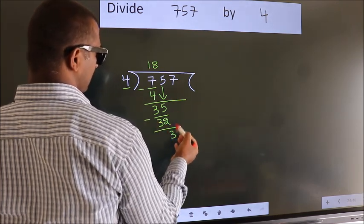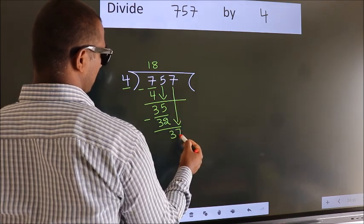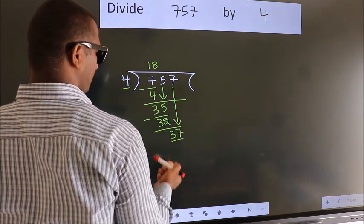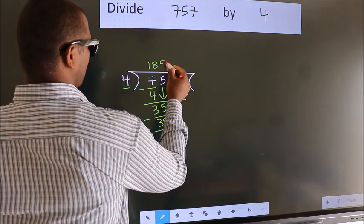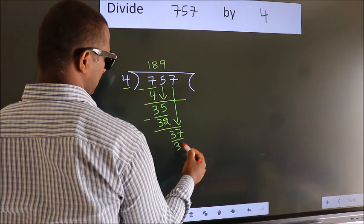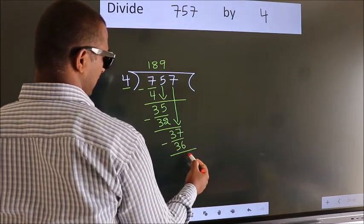After this, bring down the next number. So, 7 down. That makes 37. A number close to 37 in the 4 table is 4 nines, which is 36. Now we subtract and get 1.